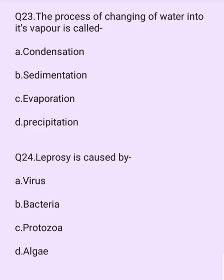The process of converting water into its vapor is called what? Options are: condensation, sedimentation, evaporation, precipitation. The answer is option C: evaporation.